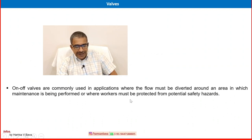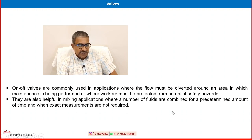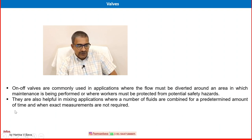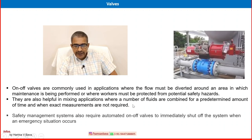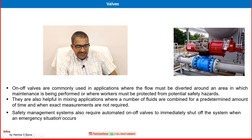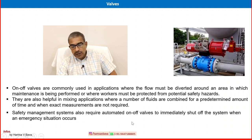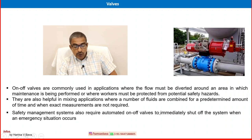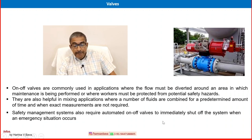On-off valves are commonly used in applications where flow must be diverted around an area in which maintenance is being performed, or where workers must be protected from potential safety hazards. They are also useful in mixing applications where fluids are combined for a predetermined amount of time and exact measures are not required. Safety management systems also require automated on-off valves to immediately shut off the system when an emergency occurs — that valve is called an SDV, or shutdown valve. It is automated using air, electrical, or hydraulic signals.